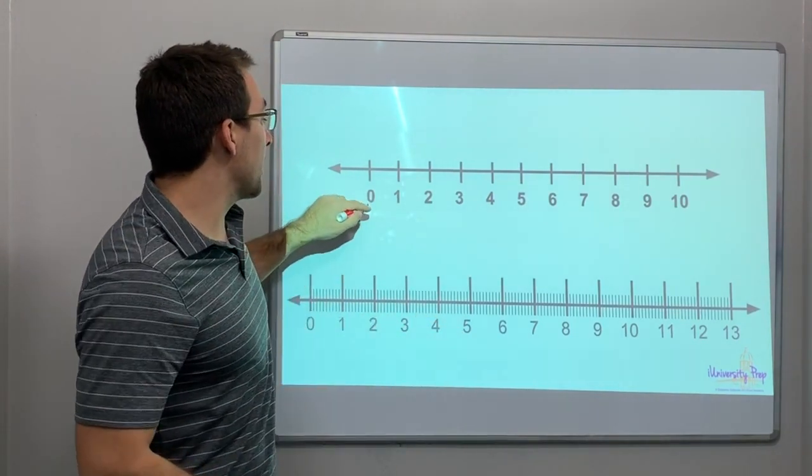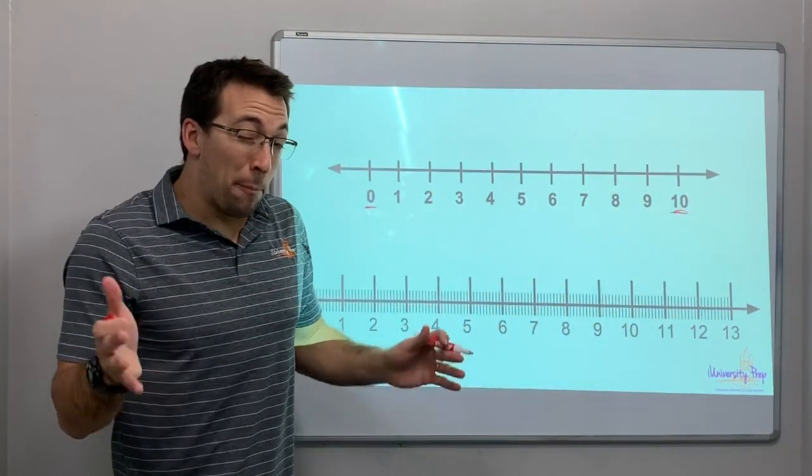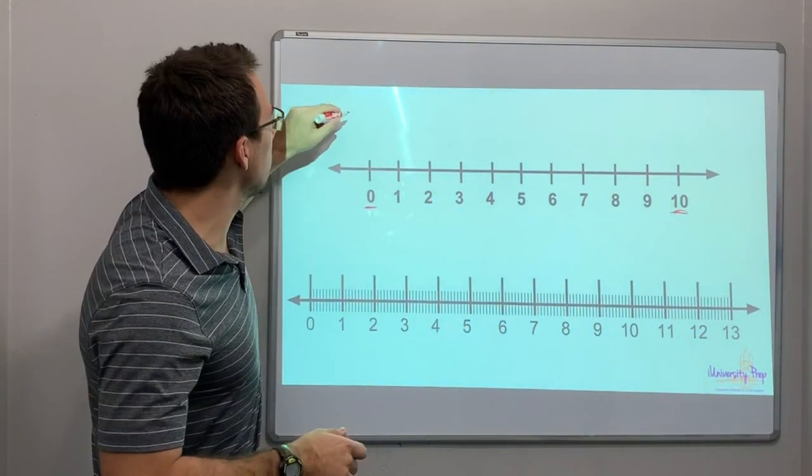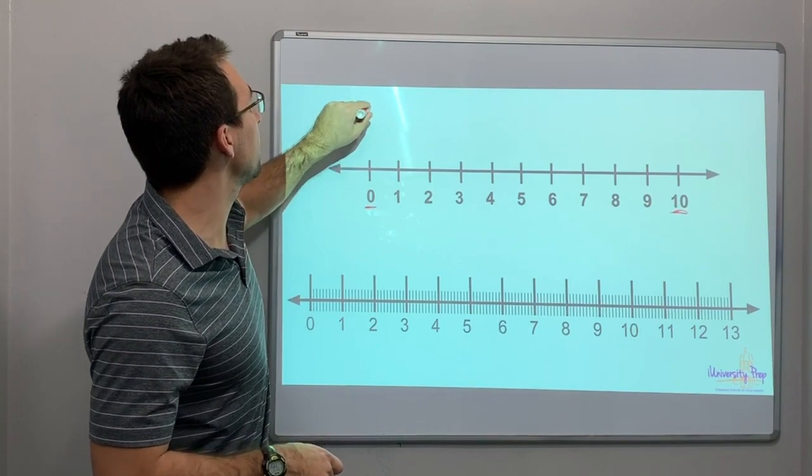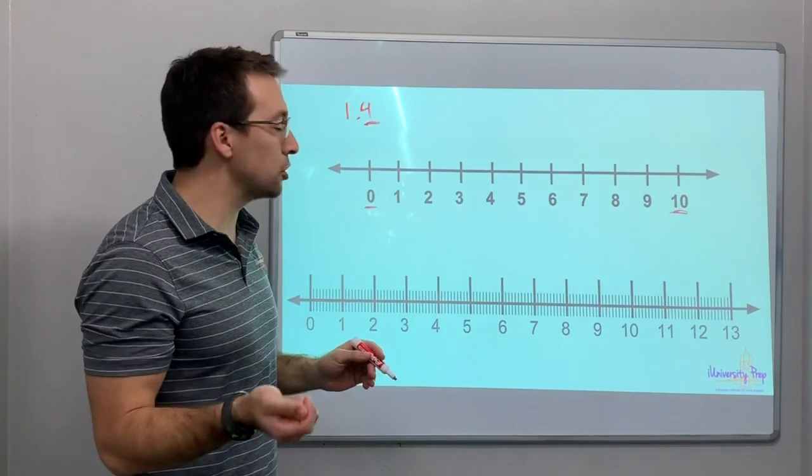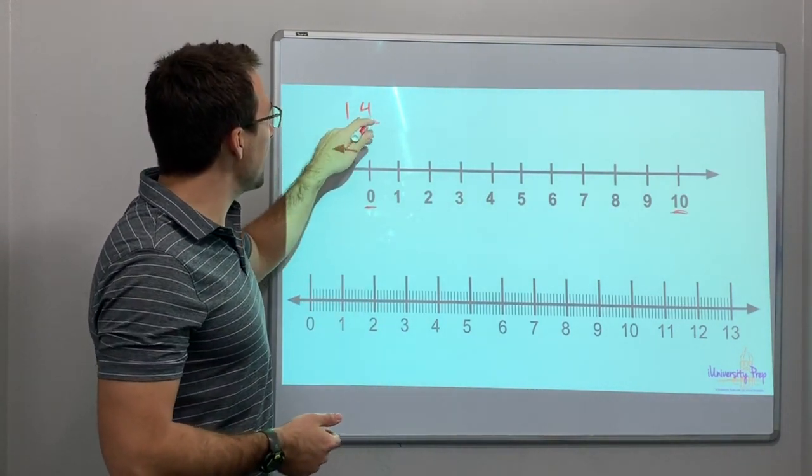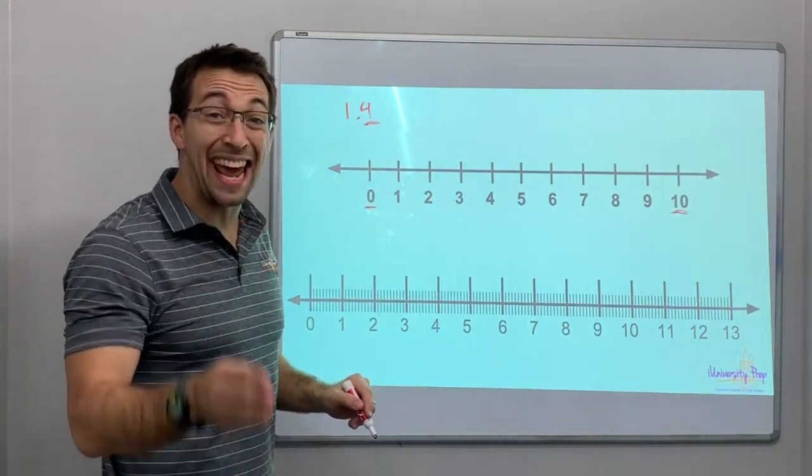So check this out. This is a number line 0 to 10. But the 10th place, right? So if we have the decimal 1.4, that 4 is in the 10th place value, the 10th place. So theoretically, between 1 and 2, there are 10.